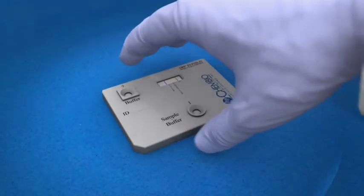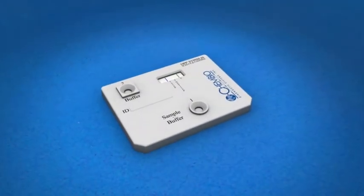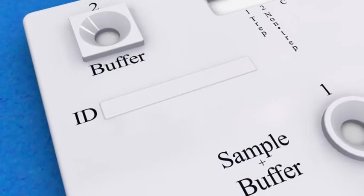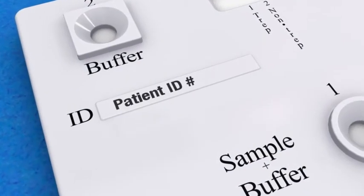Remove the DPP test device from the foil pouch and place it on a flat surface. Label the device with the patient name or identification number.